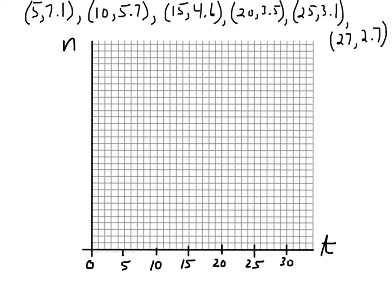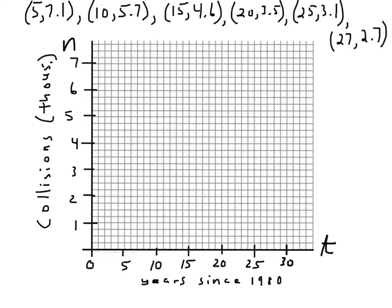Now, for the vertical axis, again, we're going to start that at 0, meaning 0 collisions. And, the highest that has to go is 7.1. So, we have to figure out how to break that down so that it fits in the space, but fills up a good part of the space. So, the way I've decided to do it is to let every four squares represent 1, meaning each square would be 0.25. Now, it's also a good idea to verbally label each axis. So, the horizontal axis represents the years since 1980, and the vertical axis represents the number of collisions in thousands.